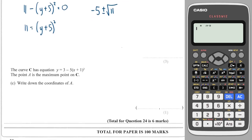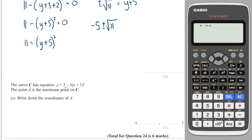And the next question says the curve has equation 3 minus 5 times x plus 1 all squared. The point A is the maximum point on C. Write down the coordinates of A. Well, the maximum point will be found when I take away as little as possible. And the square bracket here can never be negative, so the smallest it could be is 0. And that will happen when x equals minus 1. And if that is 0, then the y value is just equal to 3. And that is the maximum point we can achieve.